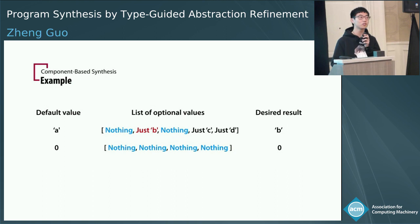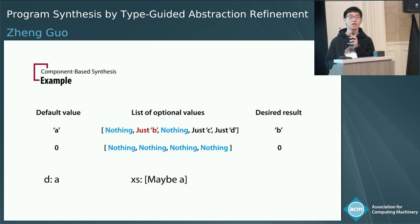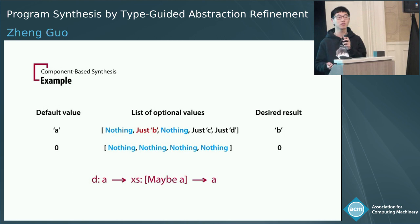Because we are targeting a functional programming language, let's describe this task with a type signature. If you have a default value of type A, and a list of optional values of type list maybe A, the desired result should have type A. Now with the type signature on hand, some programmers may think: is there any library function that does this for me already?